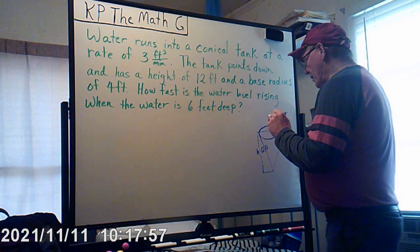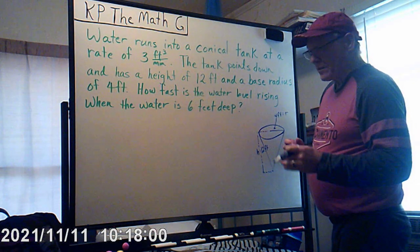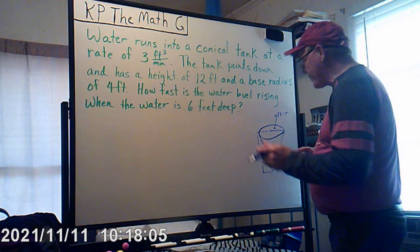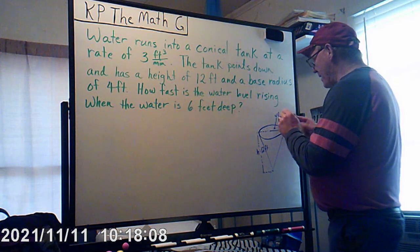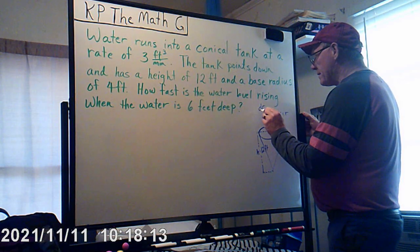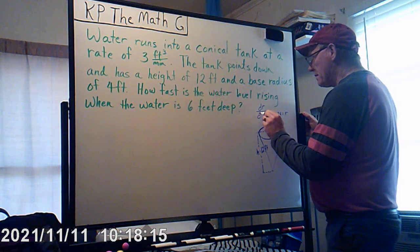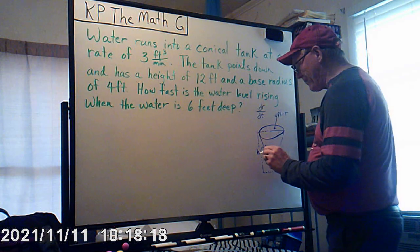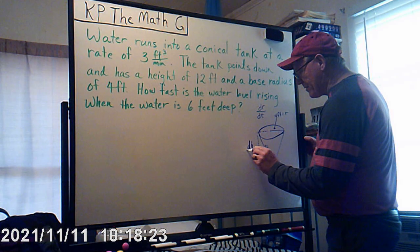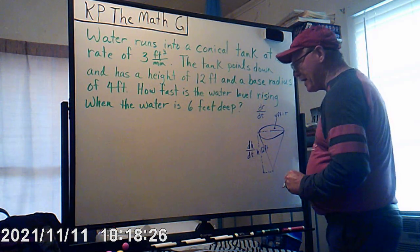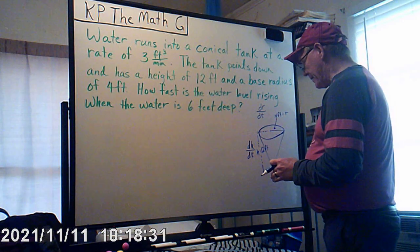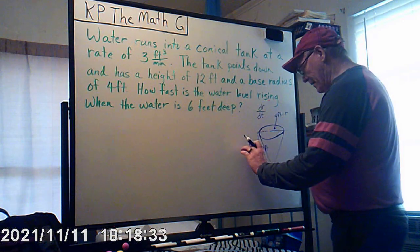On a cone we're dealing with radius and height. In these problems, most of the time if you have a radius you have a rate of change of the radius, and if you have a height it's possible to have a rate of change of the height with respect to time — that's dr/dt and dh/dt.